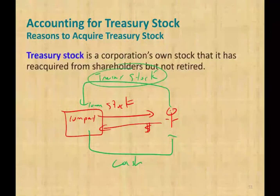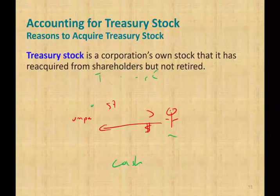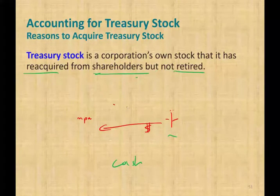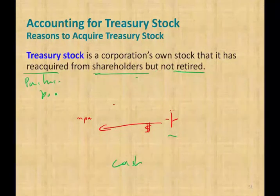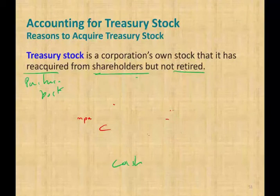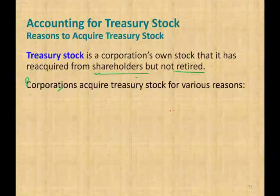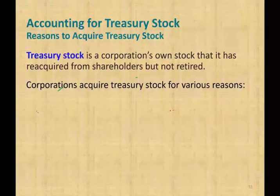Treasury stock is a corporation's own stock that has been reacquired from the shareholders but not retired. Reacquired means purchased back. Not retired means we could still issue it — we are not going to cancel it. Why would the company do so? Why would the company buy back its own stock? There are many reasons.